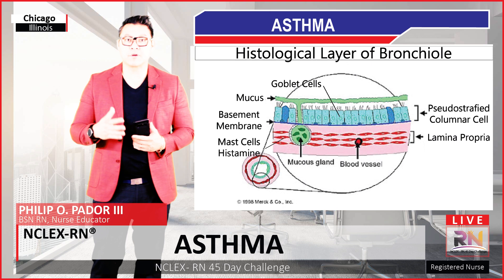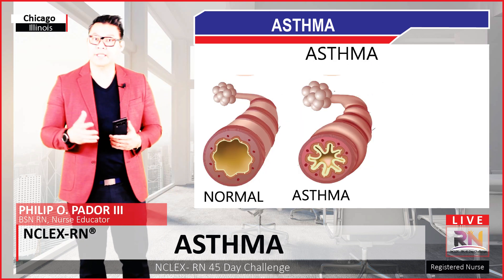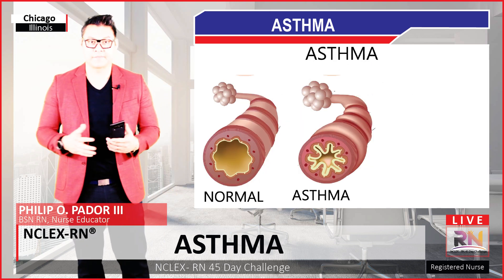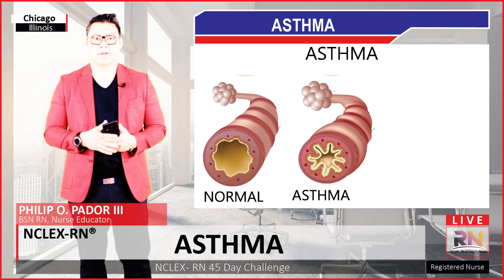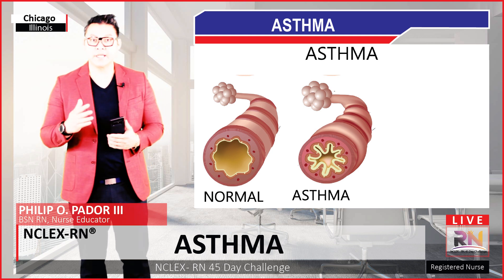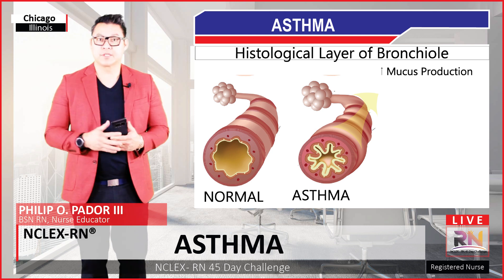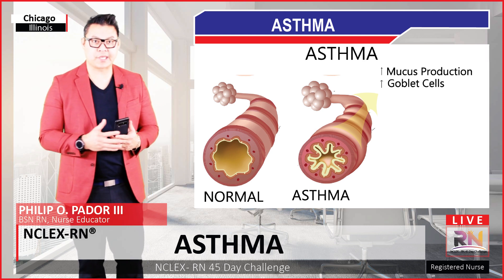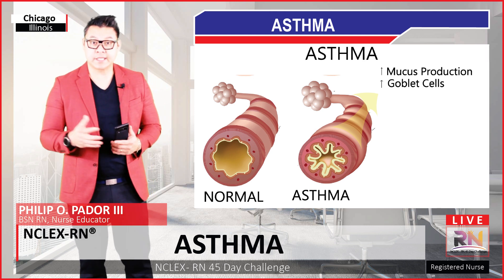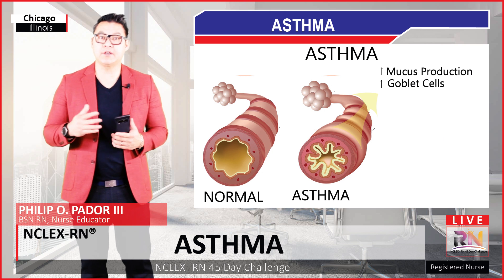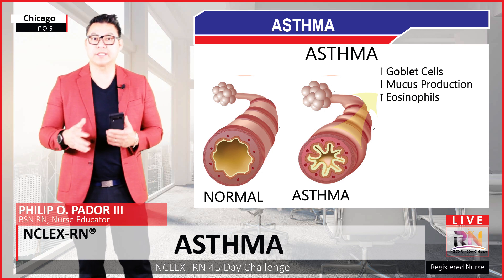Now, if we were to compare the normal bronchial layer to an asthmatic bronchial layer, we can see many differences. Firstly, we can see that there is an increase in mucus production, so there is an increase in goblet cells as well. Also, there is an increase in eosinophils in the mucus and the tissue.